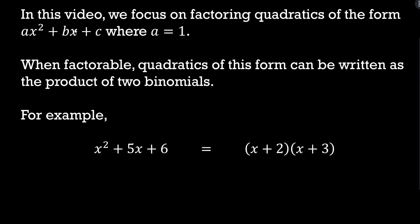In this video, we focus on quadratics of this form where a equals 1. When these things are factorable — because sometimes they're not — they can be written as the product of two binomials. So here's an example: we have a quadratic we can write as the product of two binomials. These are each binomials, and they're a product because they're being multiplied together. Broadly, the goal of factoring is to take something and write it as a product of factors which are often smaller and simpler. So this process of factoring is going from these quadratics to here — how do we go from the left to the right? How do we know to put a 2 here and a 3 here and all that stuff?